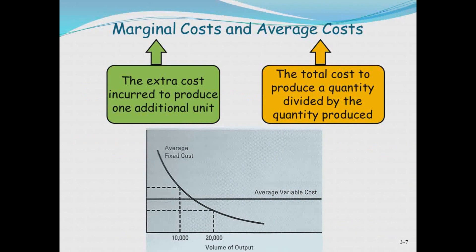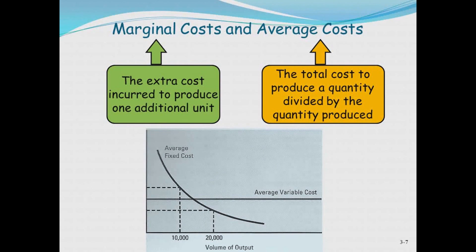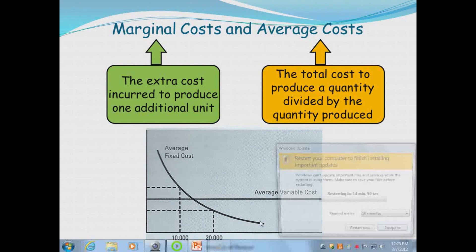Marginal cost versus average cost: the marginal cost is the extra cost required to produce one additional unit. The average cost is the total cost to produce all your units divided by the number of units. Both your marginal cost and average cost go down as you produce more units, because the fixed cost for that marginal unit is being amortized over more units. The more units you produce, all else being equal within your linear relevant range, the lower those costs will be.